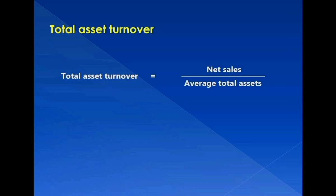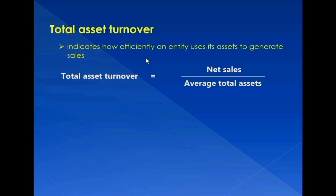The total asset turnover indicates how efficiently an entity uses its assets to generate sales. That's why this ratio is perhaps of greatest interest to an entity's management — it reveals the financial efficiency of the business operations.